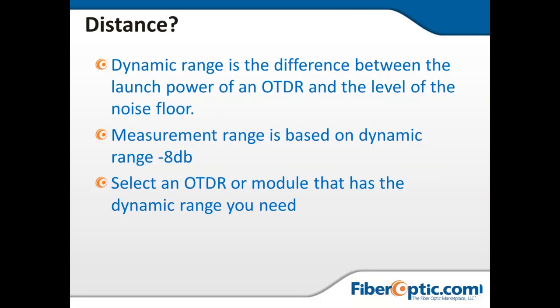You need to select an OTDR with a module that has the dynamic range for the wavelengths you're looking for. Let's say we're trying to do a 100 kilometer span and we're measuring at 1310 nanometers — we'll typically have about 0.35 dB per kilometer loss intrinsic in the fiber. That means no splicing, no connectors, nothing — just as we're going down the fiber, light is being absorbed at about 0.35 dB per kilometer.